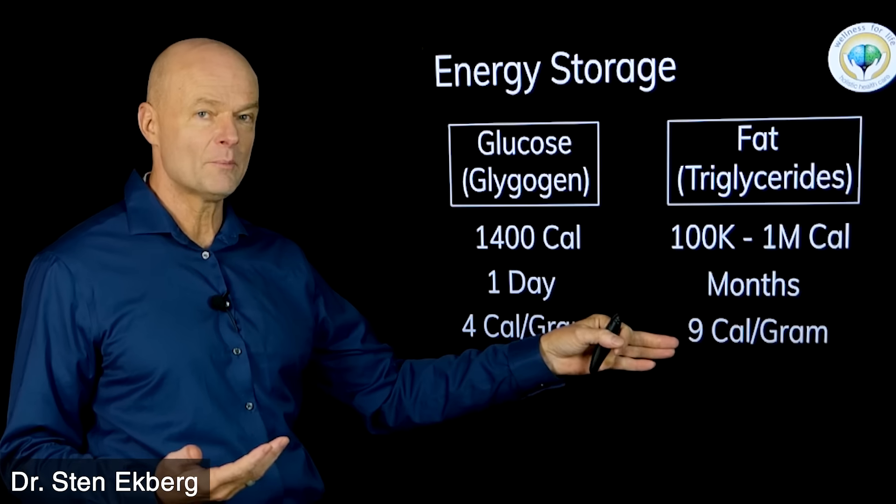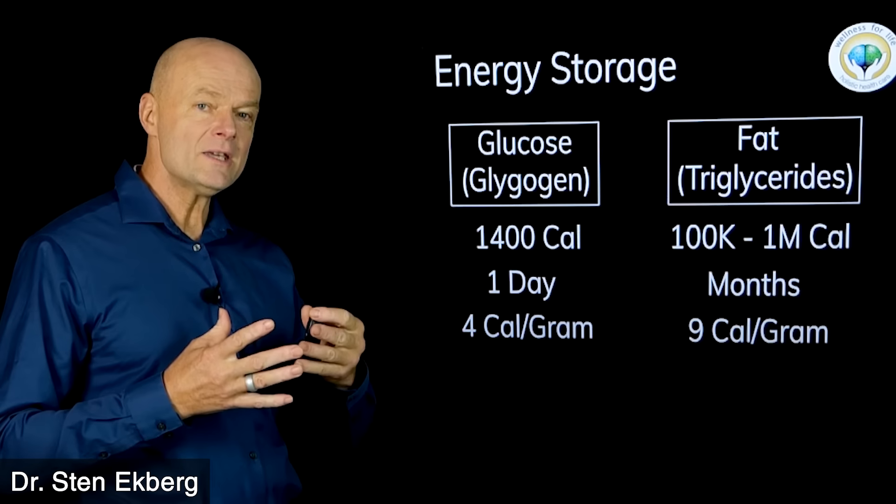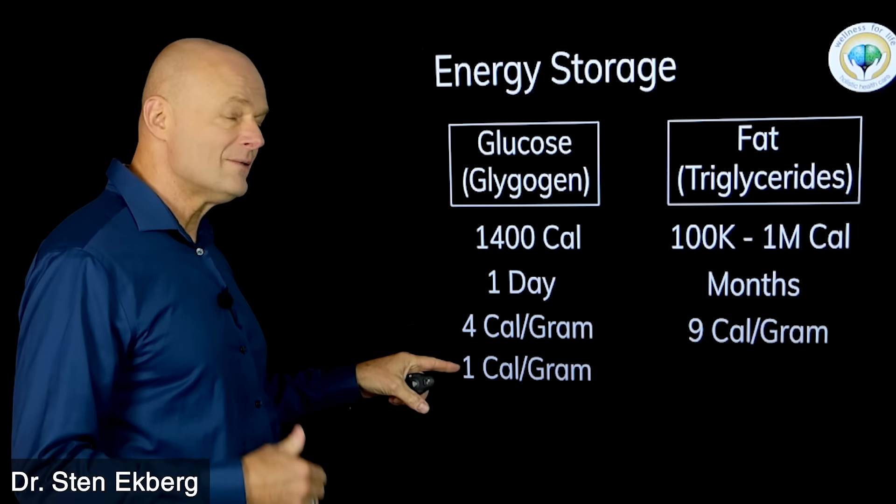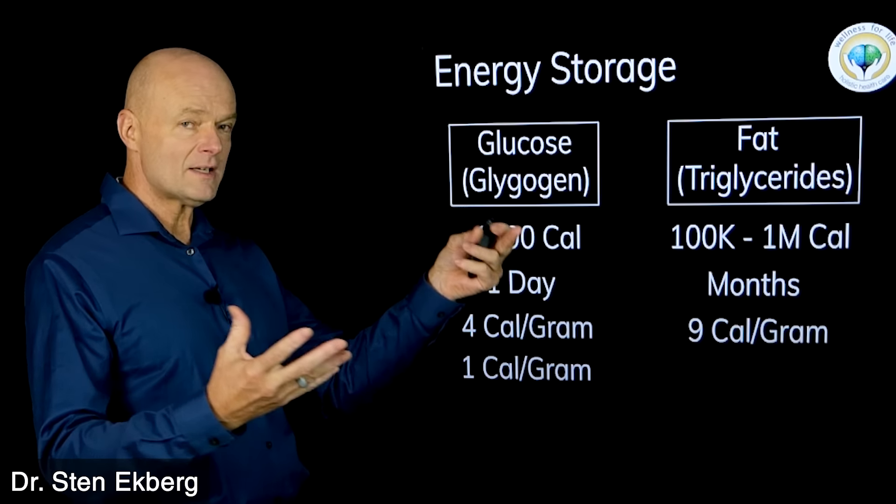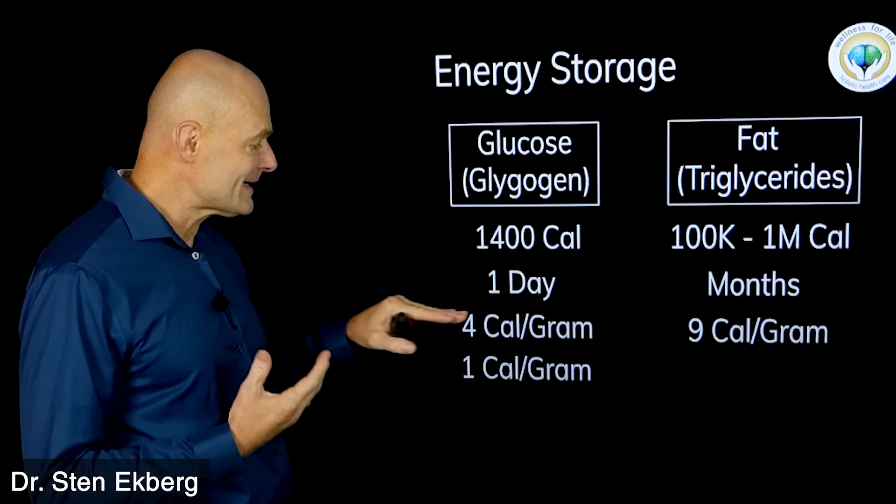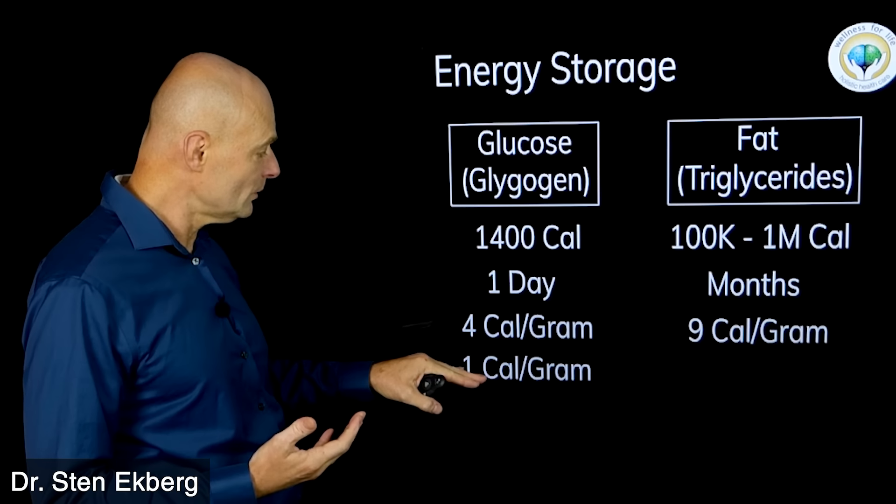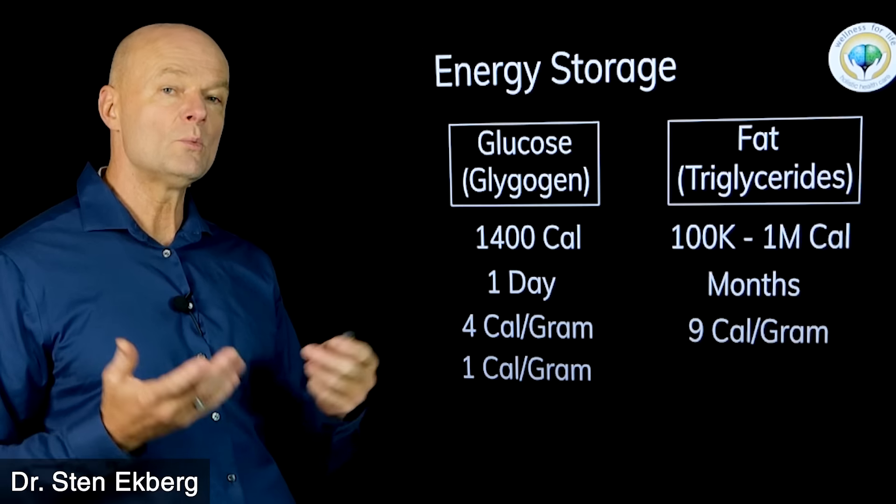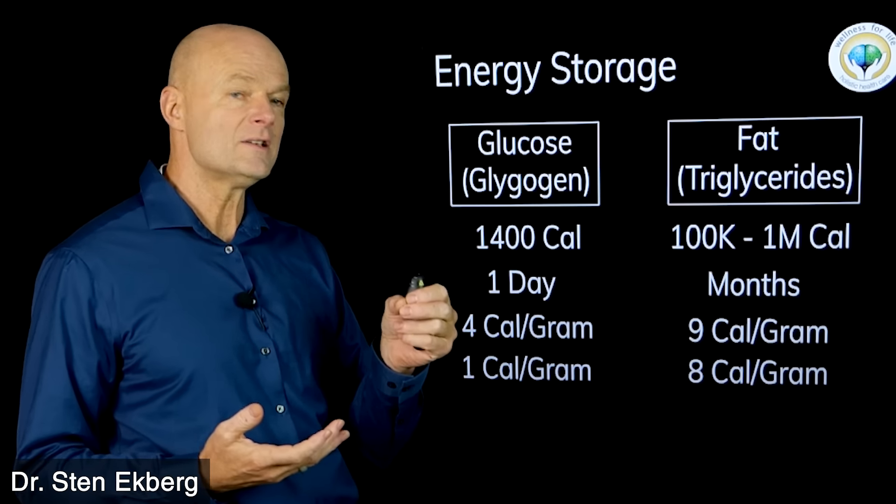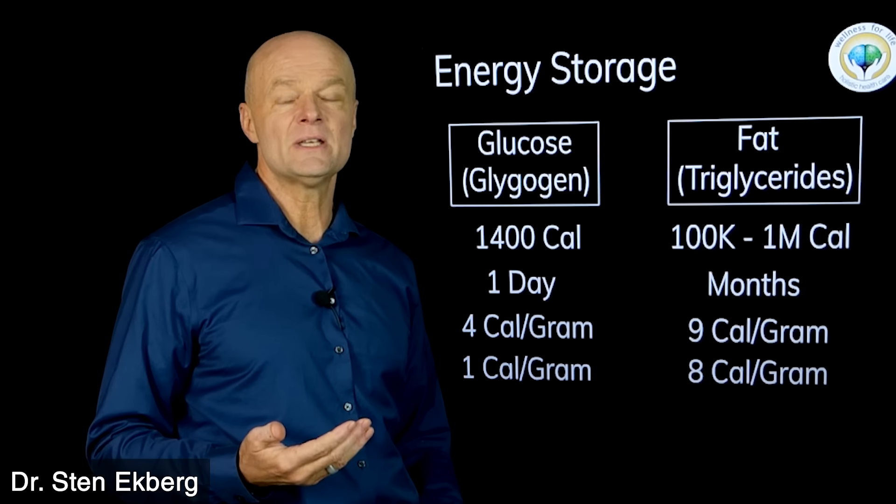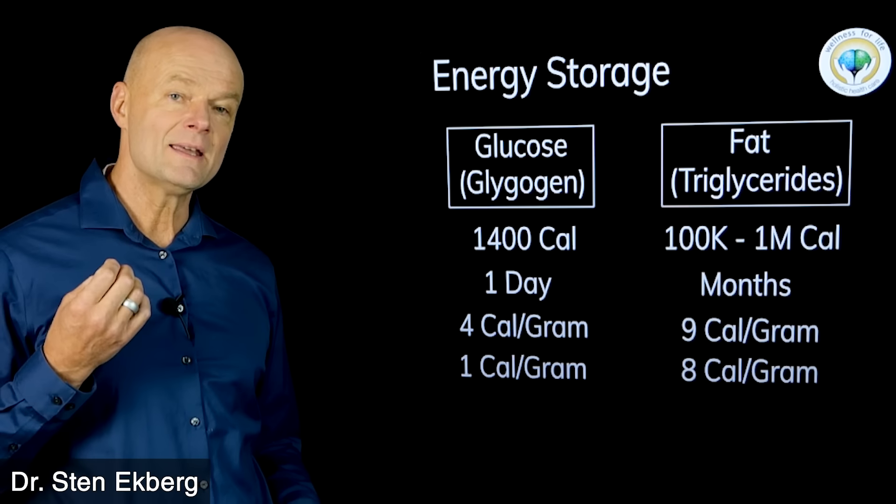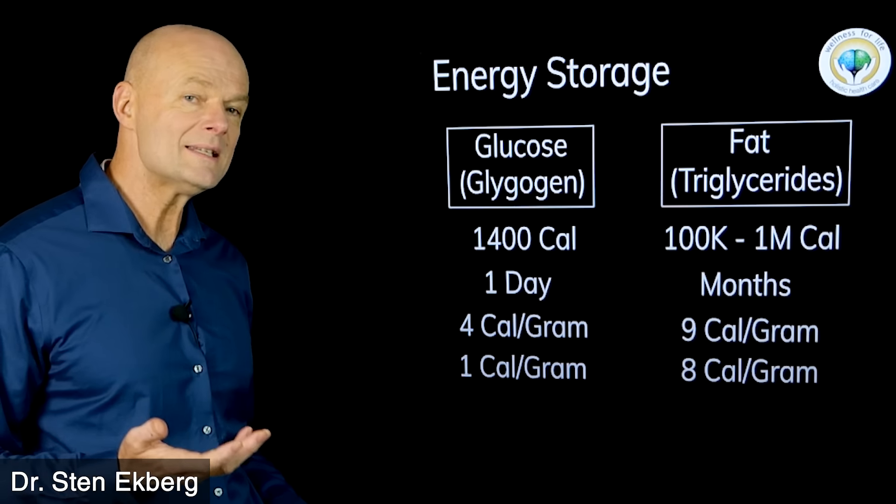Glycogen can last you about one day, fat can last you for months. Why does the body store it mostly as fat? Because it's so much more effective. Carbohydrates have four calories per gram, fat has nine calories per gram. But that's not even a fair comparison, because glycogen is like a sponge, it binds a lot of water. Every gram of glycogen holds about three or four grams of water, so 75% of glycogen is really water. We're only getting about one calorie per gram when we store glycogen. With fat, we're really getting about eight calories per gram.